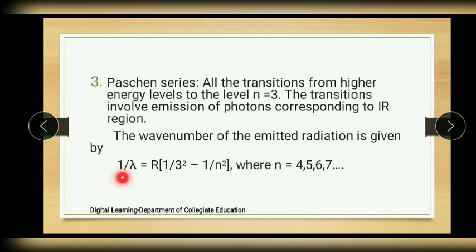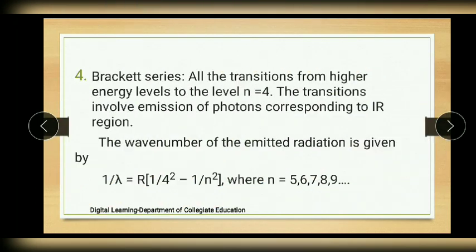The fourth one is the Brackett series. Transitions from higher energy levels to the fourth energy level (n = 4) give the Brackett series. These transitions involve emission of photons corresponding to the IR region.